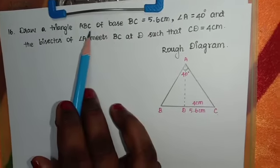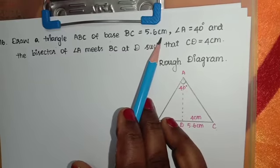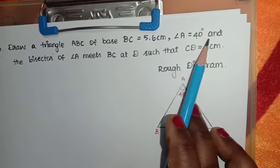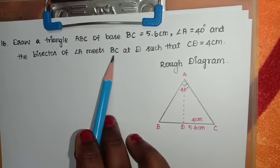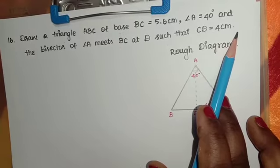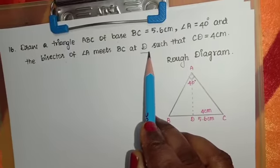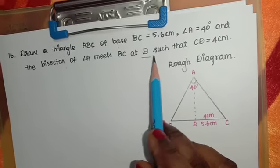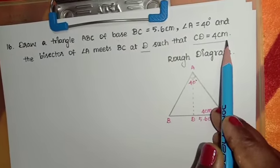Draw a triangle ABC of base BC equal to 5.6 centimeter, angle A 40 degree, and the bisector of angle A meets BC at D such that CD is equal to 4 centimeter. This is D, triangle ABC, D is equal to 4 centimeter.